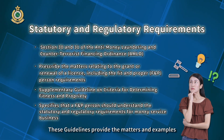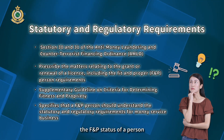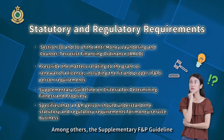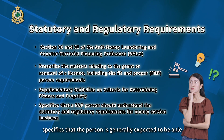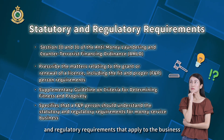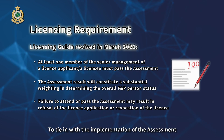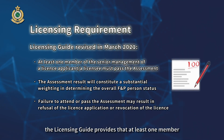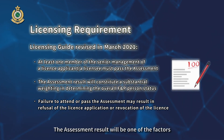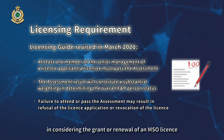These guidelines provide the matters and examples that the CCE considers relevant in determining the F&P status of a person to be associated with operating a money service. Among others, the supplementary F&P guideline specifies that the person is generally expected to display an understanding of the statutory and regulatory requirements that apply to the business. To tie in with the implementation of the assessment, the Licensing Guide provides that at least one member of the senior management must pass the assessment. The assessment result will be one of the factors that the Commissioner will have regard to in considering the grant or renewal of an MSO license.